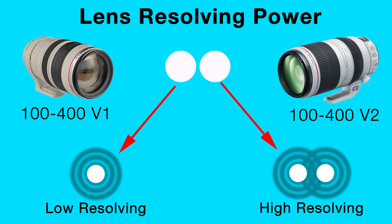It would actually look like a slightly larger single point of light. Now on the other hand, a high resolving lens has the ability to project two very close points of light with higher detail.